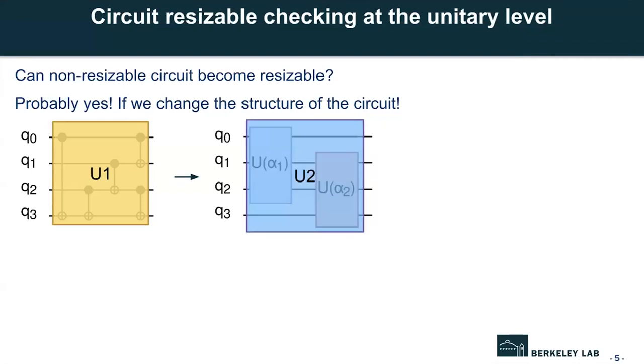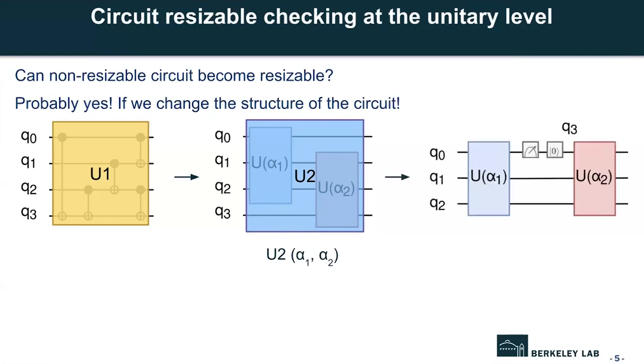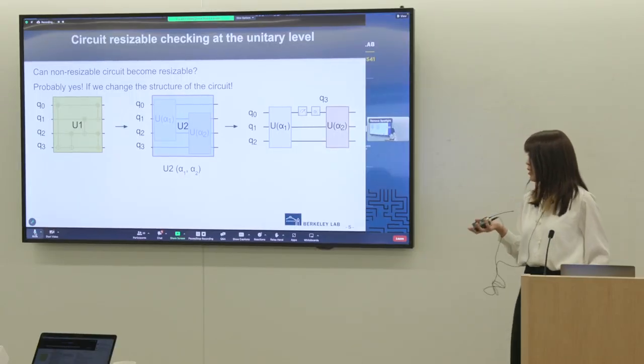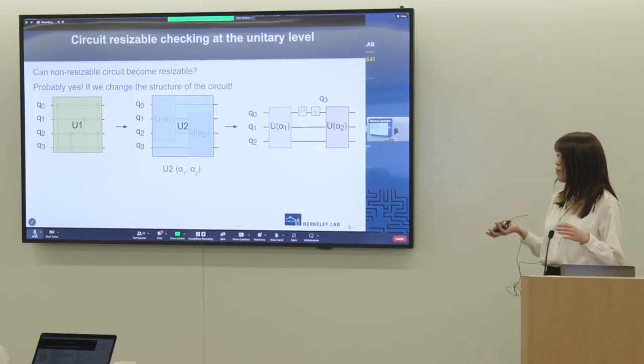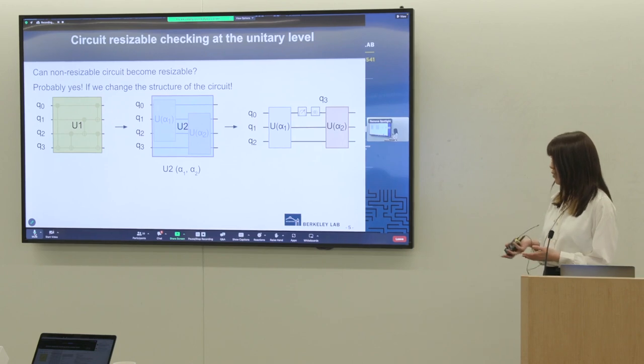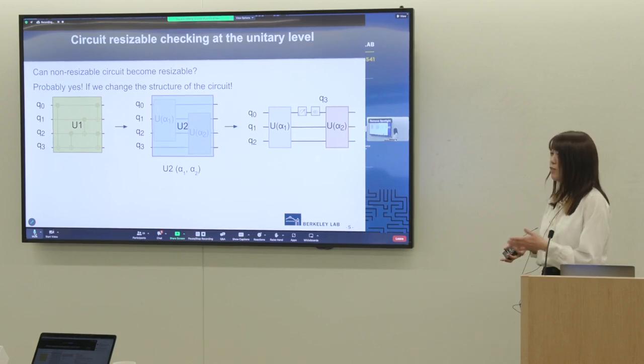And then we can write the matrix of this circuit with parameter alpha 1 and alpha 2. Then we use some optimizer to find the optimal parameters alpha 1 and alpha 2, such that U2 is approximately the same as U1. If we can find such parameters, it means that we can reuse Q0 for Q3. But if we cannot find such parameters, it means that no matter how we change the structure of the circuit, we can never reuse Q0 for Q3.